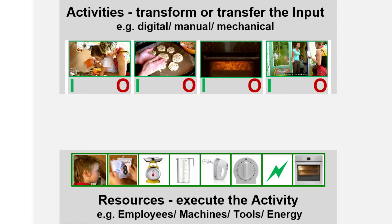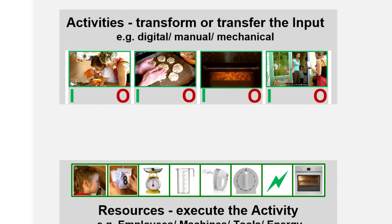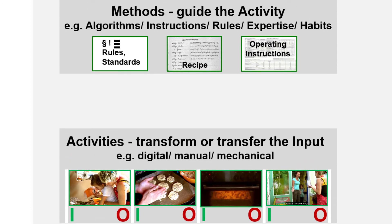Each activity is executed by resources, for example our chef and the oven. Other resources support the execution, for example the calendar, timer, the kitchen scales and energy. Resources can be machines, equipment, tools or other devices and utilities. But even the best resources alone do not add value by the activity being executed. We need guiding methods that determine how the resources should execute the activities. In our bakery, for example, these are a recipe, kitchen standards, operating instructions for our equipment and the expertise of our chef. Methods can be any digital or analog instructions, procedures, algorithms, expertise or habits that guide the resources.